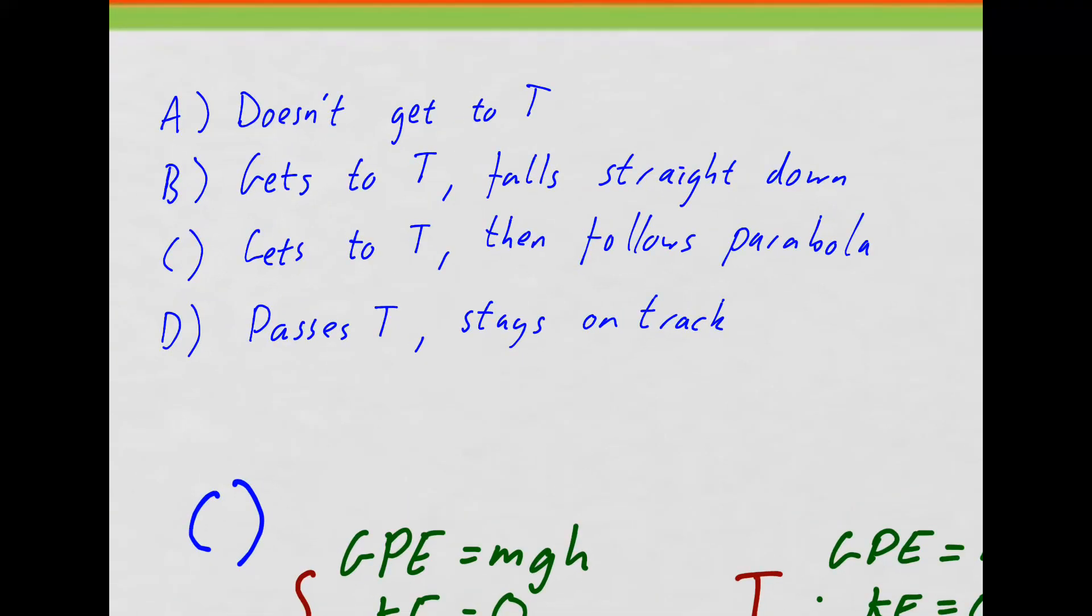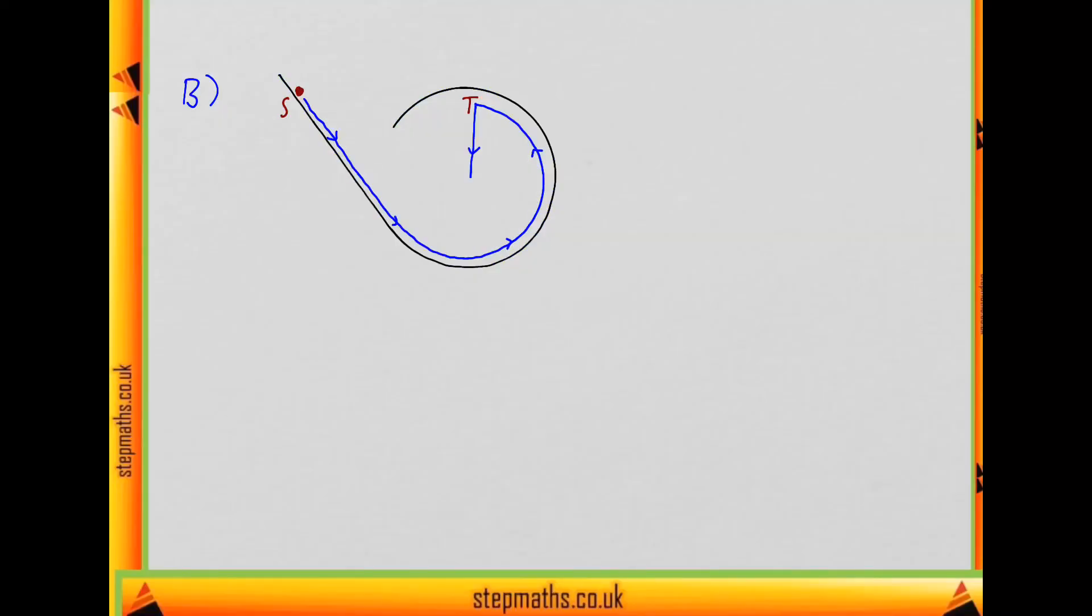OK, so now let's look at B, which is that it gets to T and then falls straight down. OK, so that looks something like this. And this initially seems similar, but actually in terms of energy, it's OK, because at this point it has, we can say it has zero speed before it starts falling and therefore the energy works out. But this should look suspicious because we don't normally get these sharp corners in trajectories in nature unless there's a collision. But how could we show this can't actually work? Well, if thinking about energy doesn't work, we could think about forces instead.